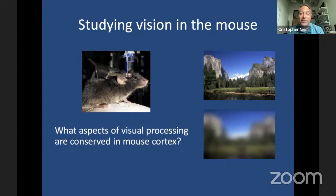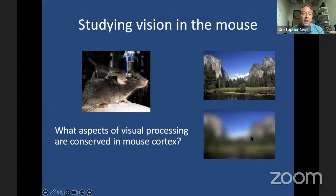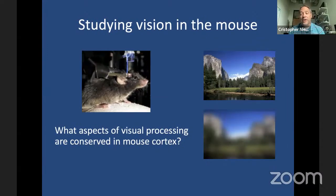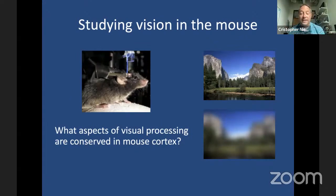A big question at the time was: can you actually even study vision in the mouse? Aren't mice blind? It's not actually such a bad question. Mice do have very low acuity vision — an image ends up looking much blurrier to the mouse. The question was, given that they're working in this lower resolution regime, are other aspects of visual processing conserved? Are they running similar algorithms on lower resolution information, or have they lost major aspects of cortical processing previously studied in cat and monkey?